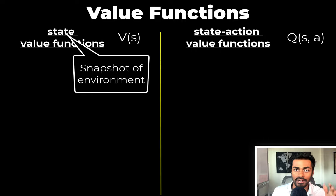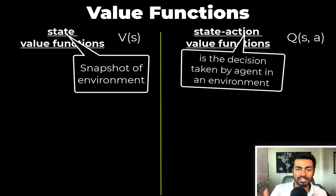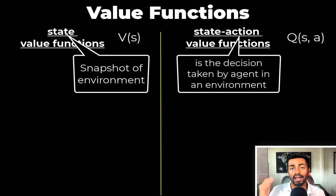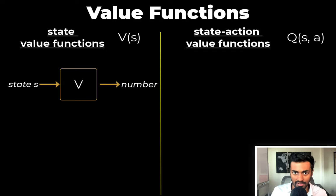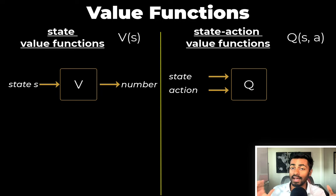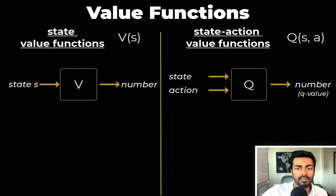A state is a snapshot of the environment and an action is the decision taken by an agent in an environment. So the state value function will take a state as input and output a real number. Whereas the state action value function will take the state and action as input and it'll output a real number. So this real number is also known as a Q value. Ooh, Q. So we're getting close to Q-learning here.